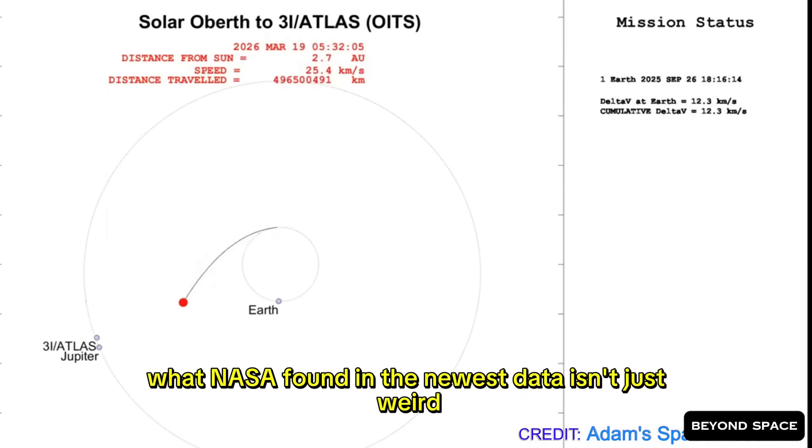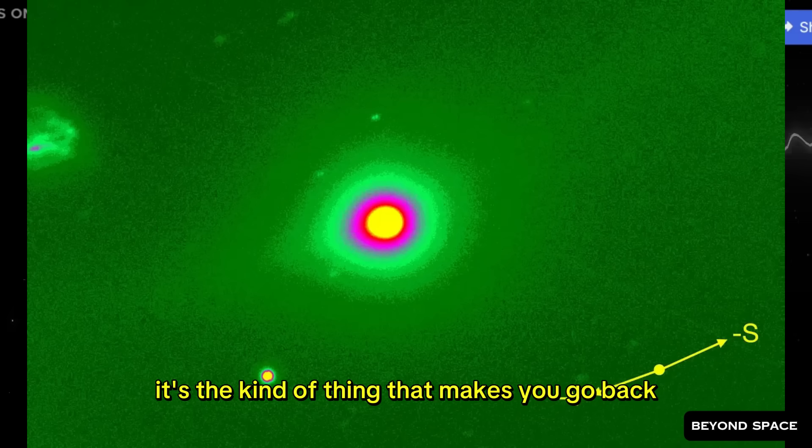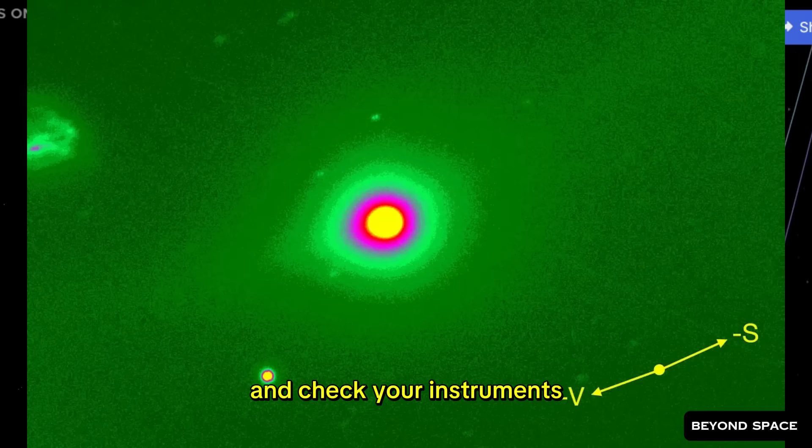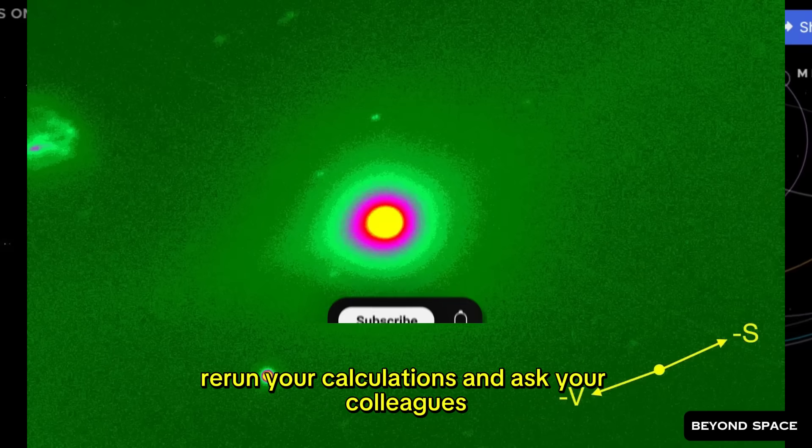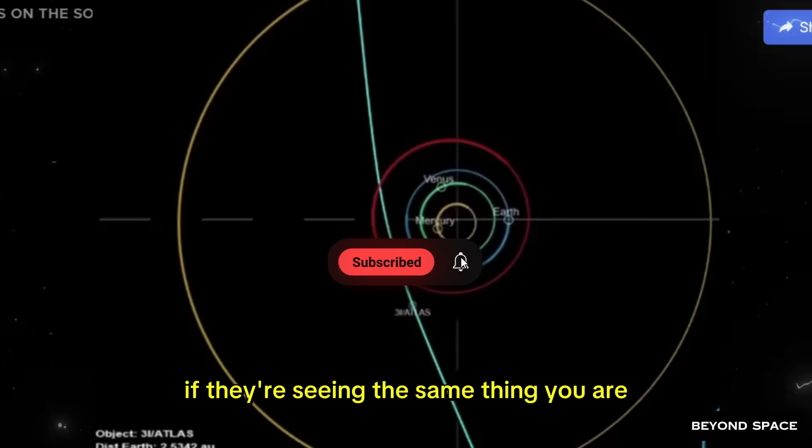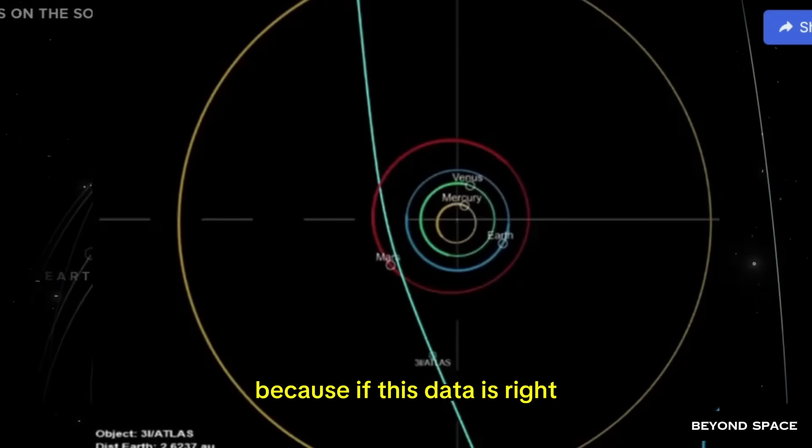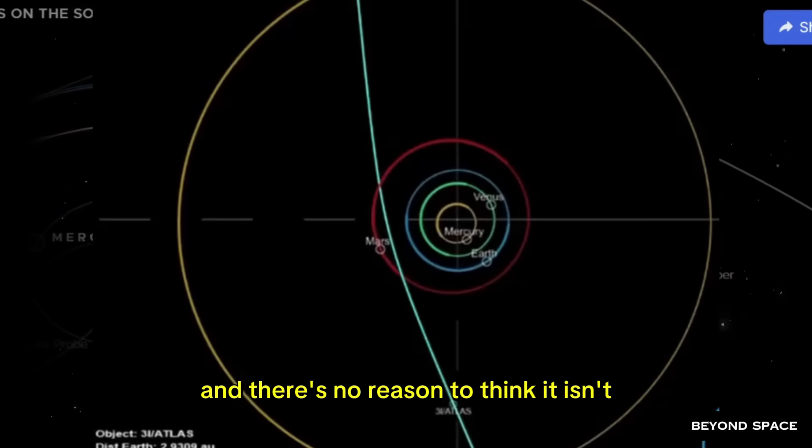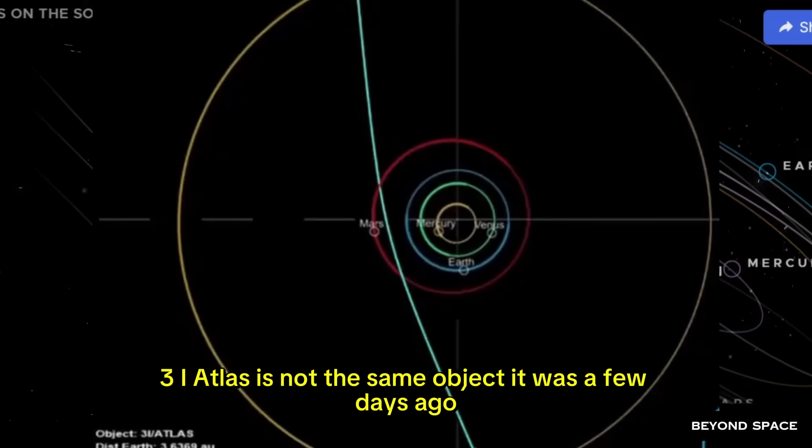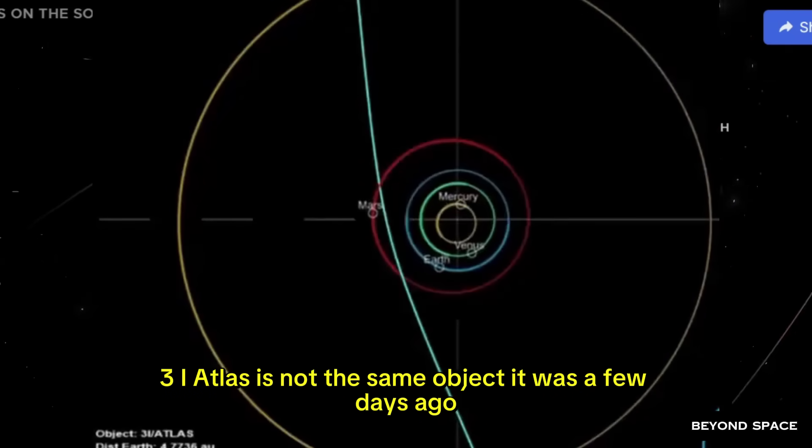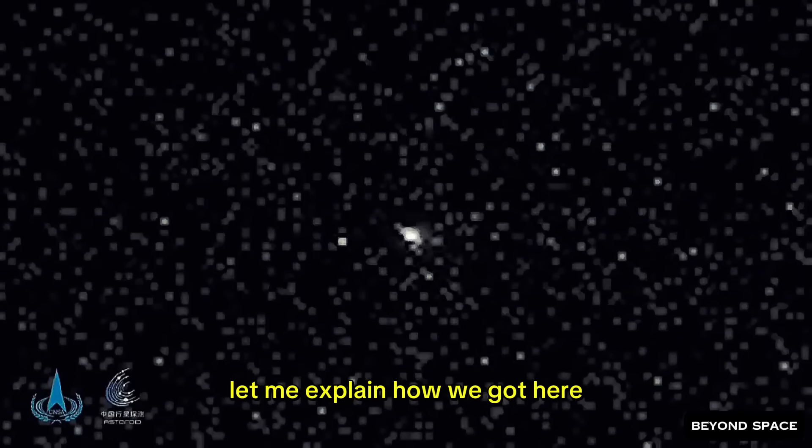What NASA found in the newest data isn't just weird. It's the kind of thing that makes you go back and check your instruments, rerun your calculations, and ask your colleagues if they're seeing the same thing. Because if this data is right, and there's no reason to think it isn't, then 3i Atlas is not the same object it was a few days ago.